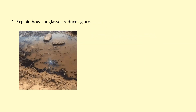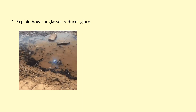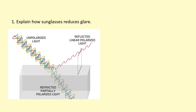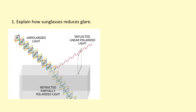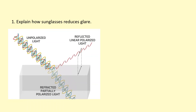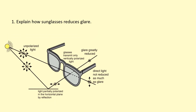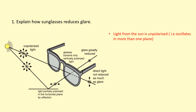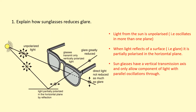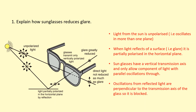One use of polarizing filters is in sunglasses to reduce glare. Light from the sun is unpolarized, but when it reflects off a surface like water it becomes partially polarized — oscillating mainly in the horizontal plane. The transmission axis of polarizing sunglasses is vertical, so it blocks those horizontal oscillations from the reflected light, which is how glare is reduced.